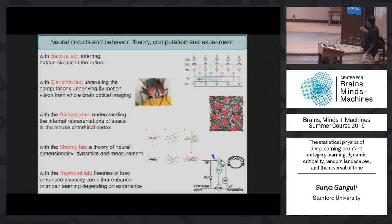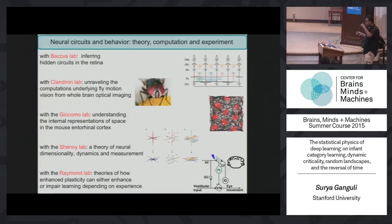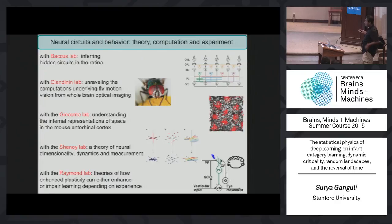In the Clandinin lab, we've been unraveling the computations underlying motion vision. When you swat a fly, it's really hard because they can quickly detect motion coming towards them and fly away. There's been lots of work on what algorithms might underlie motion estimation—the Reichardt correlator, the Barlow-Levick model, and so forth. We've applied systems identification techniques to whole-brain calcium imaging data from the fly visual circuit, and we literally identify the computation, finding it's a mixture of all previous approaches.